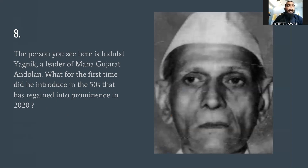Question number eight: the person you see here is Indulal Yagnik, a leader of the Maha Gujarat Andolan. What sort of thing did he introduce in the 1950s that regained prominence in 2020? He introduced it in the 1950s, and it came back into prominence somewhere in the middle of 2020. Think about something that was happening all around — a restriction — that regained prominence in 2020.